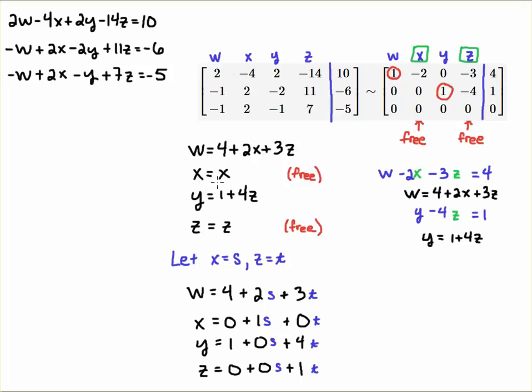And then here for Y, we have 1 plus 0S because there's no X term plus 4Z. So that will be 4T because T replaces Z. And then same thing with Z, I have no constant term, there is no X and there is no Y term. So, because Y is a pivot, so I will write this as Z is equal to 0 plus 0S plus 1T. So now that I have the constants lined up, the 4, 1, 0, there is 4, 0, 1, 0.